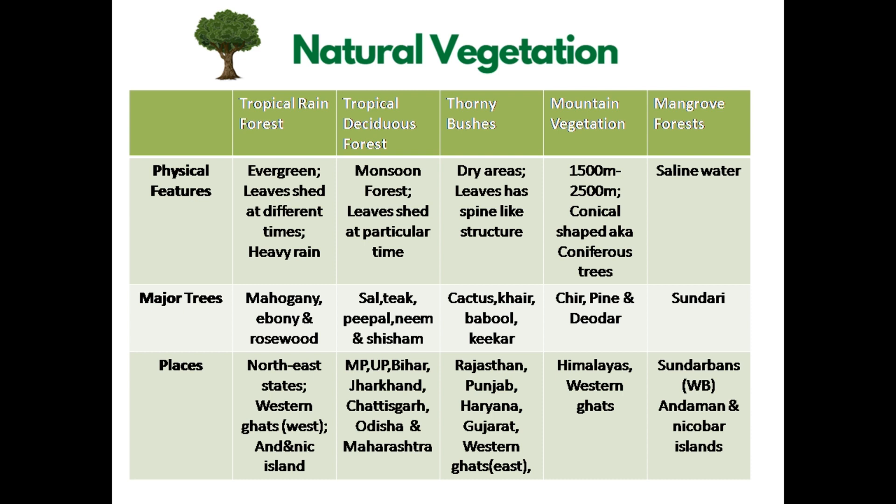Tropical rainforests are found in the Andaman and Nicobar Islands, certain parts of the northeast, and on the western side of the Western Ghats. Next comes the tropical deciduous forest. A major part of India has this type of forest. They are less dense and shed leaves only at a particular time of year. Major trees are sal, teak, peepal, neem and shisham.